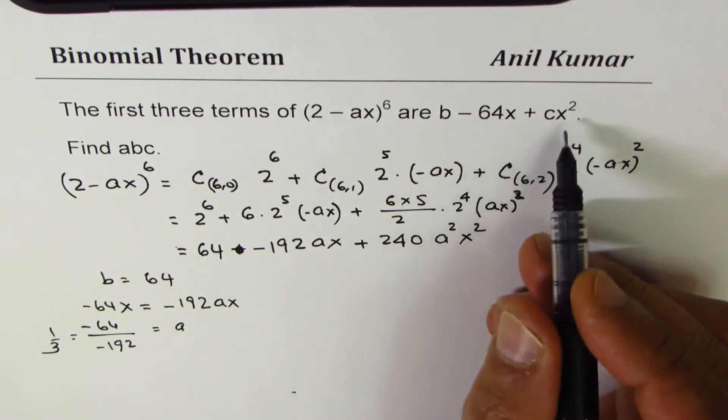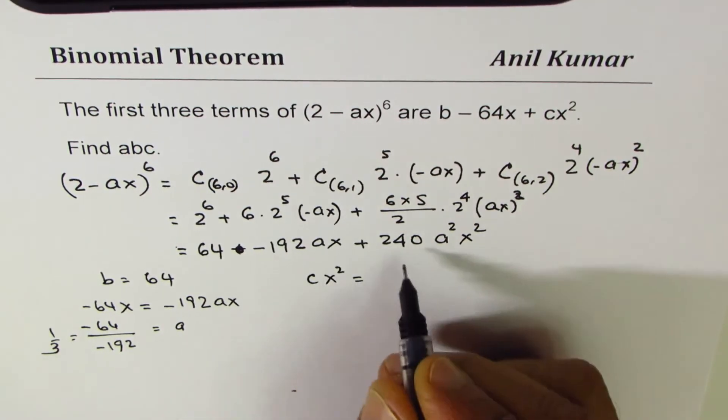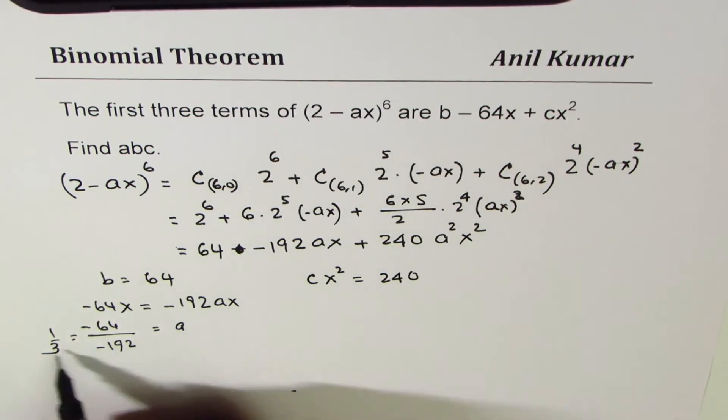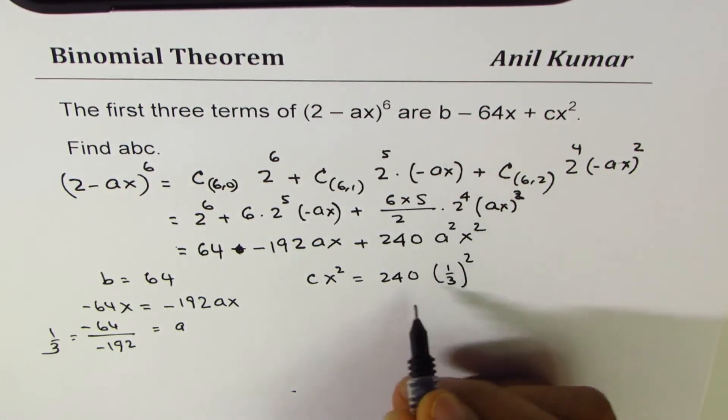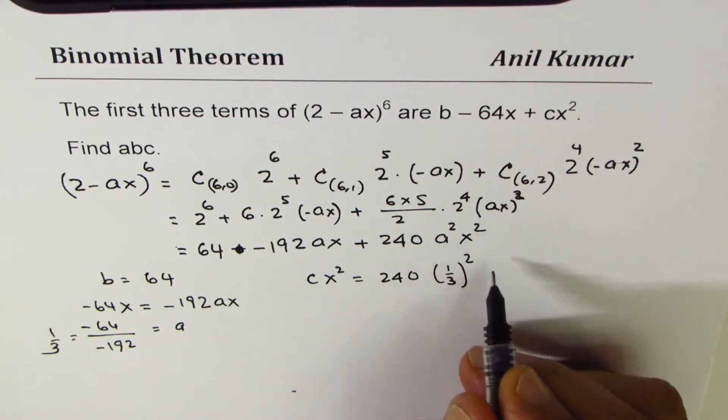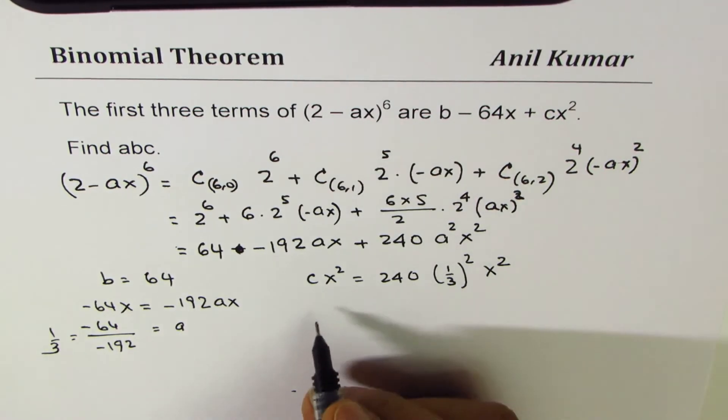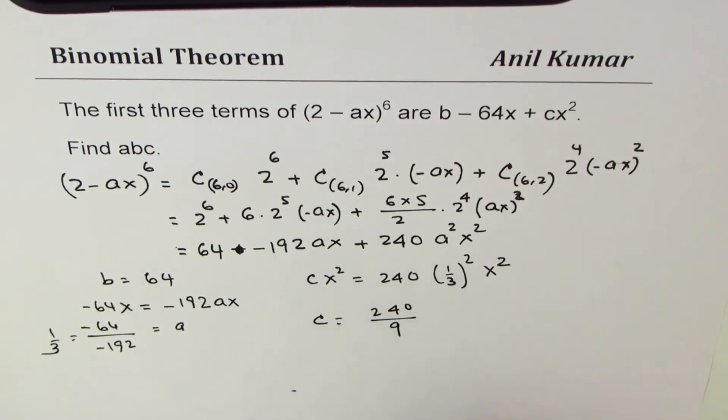And cx^2, let's do here. cx^2 = 240a^2. Instead of a, I'll write 1/3, (1/3)^2 × x^2.